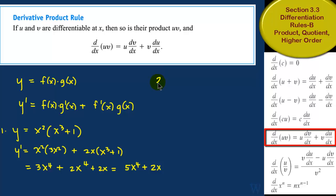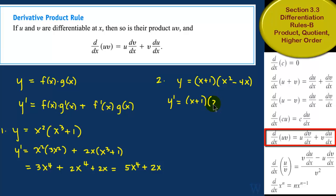Let's take another example. Suppose y is equal to x plus 1 times x squared minus 4x. You have the first function times the second function. y prime is equal to: take the first function and multiply by the derivative of the second, which is 2x minus 4, plus take the derivative of the first — the derivative of x plus 1 is 1 — times the second function x squared minus 4x.